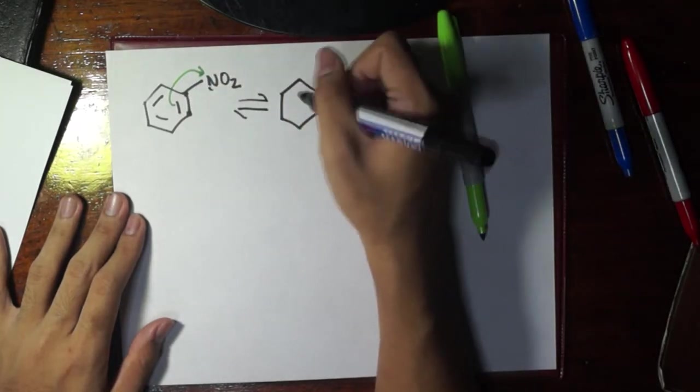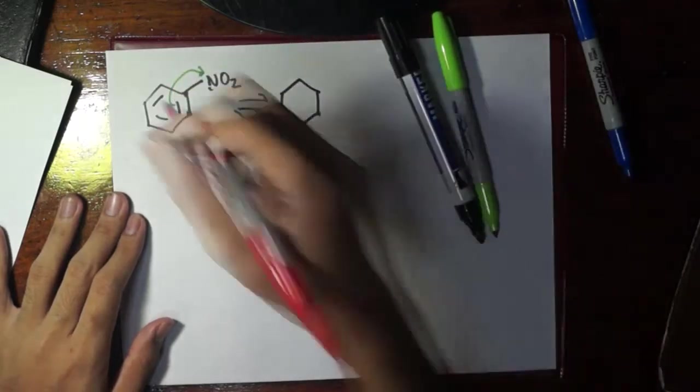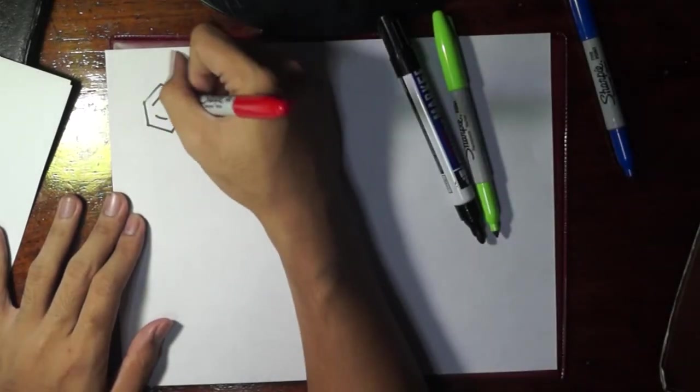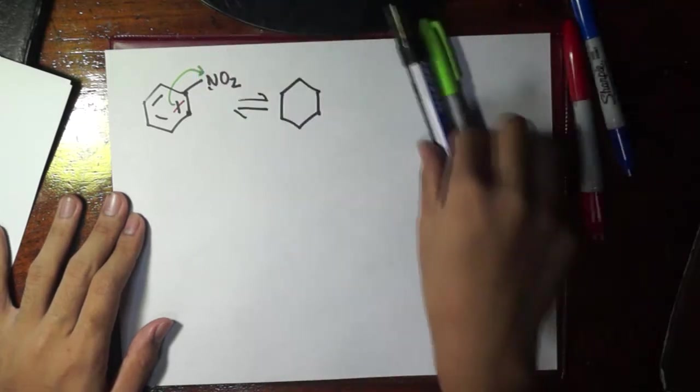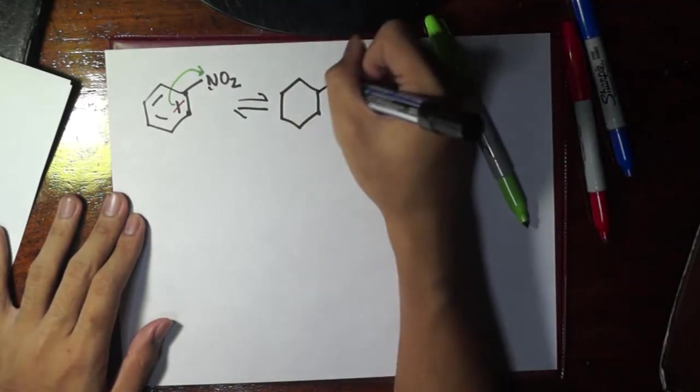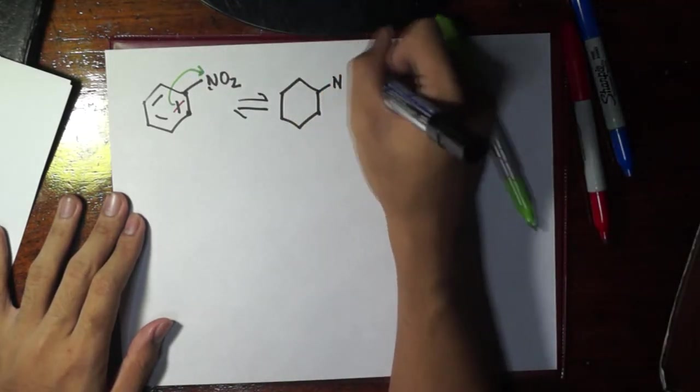Because imagine you're going to remove this because you're going to donate this to the nitrogen. So what happens, the nitrogen may be fine. Nitrogen here is positive, here it becomes neutral.